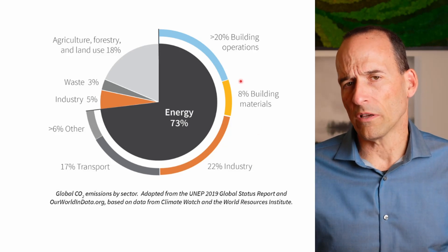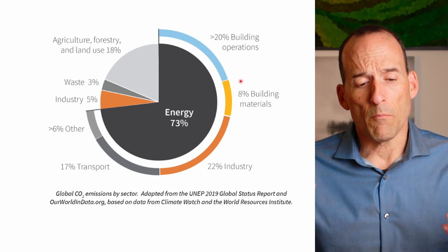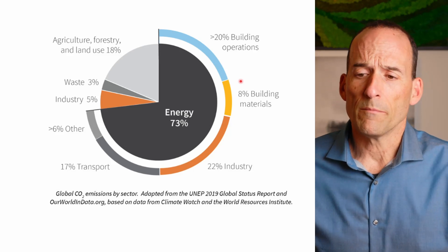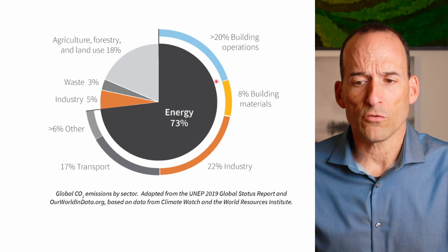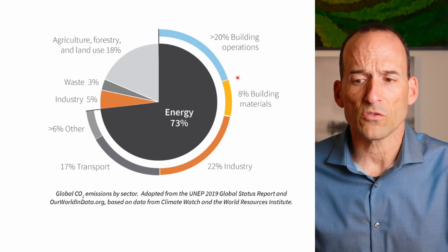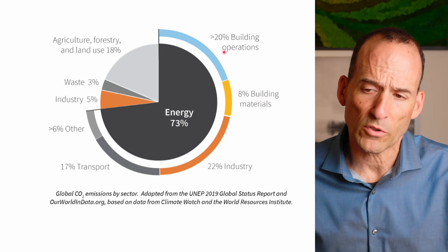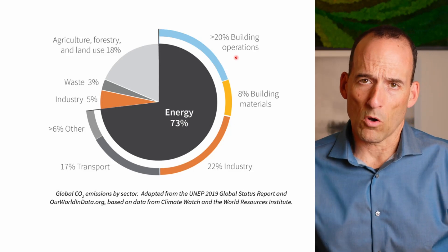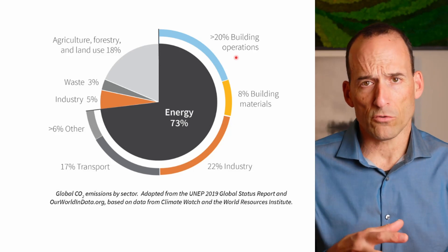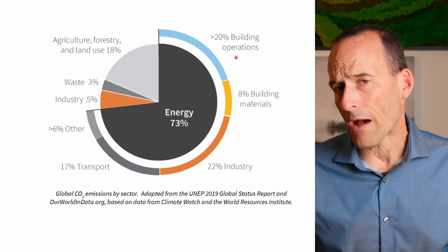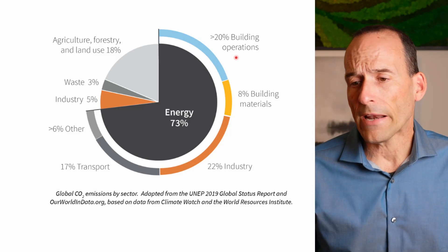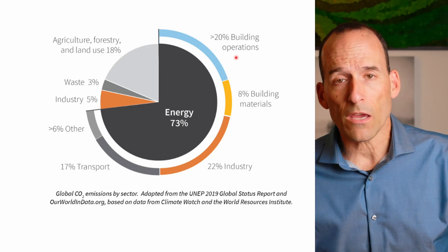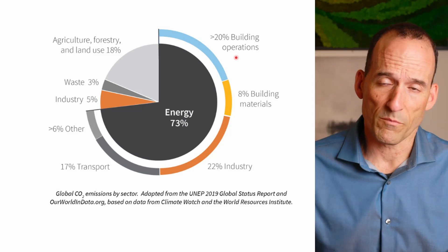Think about this — this is all the buildings that we have on the planet now: buildings built 1,000 years ago, buildings built 10 years ago, and buildings built yesterday. But if you look at the amount of carbon attributed to building materials — to actually making those building materials to build those buildings — it's only about 8%. The building materials is actually a very small portion of the actual carbon produced by buildings, and if you look at it that way, that's correct.